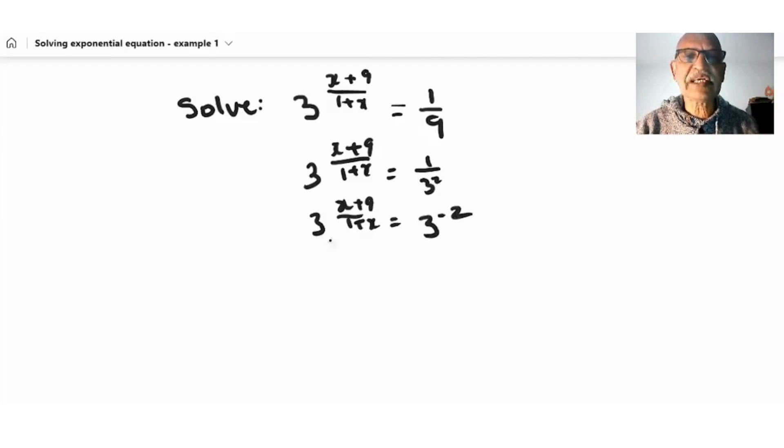Since the two bases are the same, then the exponents must be equal. So this exponent must be equal to this exponent. Therefore, we say x plus 9 over 1 plus x equals negative 2. We do cross multiplication.